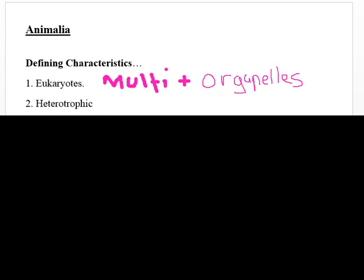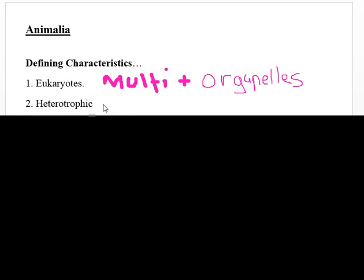The next characteristic is heterotrophic. Heterotrophic means that it eats other organisms to get its energy. If you're not heterotrophic, you're a plant, so this one separates all the plants. Heterotrophic organisms include carnivores, herbivores, and omnivores. Some eat plants, so herbivores; some eat other organisms or meat, those are carnivores. We even have detritivores that eat dead decaying matter. But all of those are heterotrophic — they eat other organisms to get their energy.